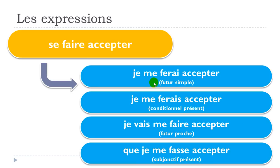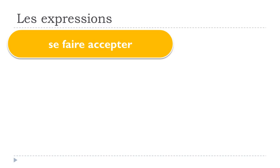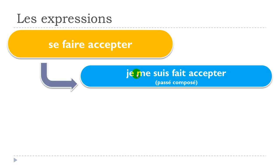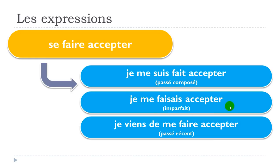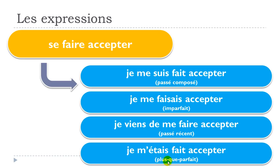Now four past tenses. Passé composé: je me suis fait accepter. Imparfait: je me faisais accepter. Passé récent: je viens de me faire accepter. Plus que parfait: je m'étais fait accepter.